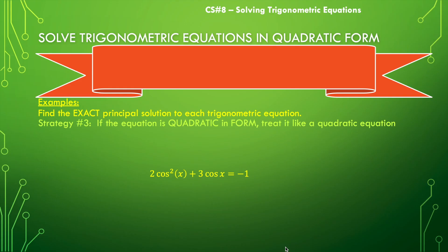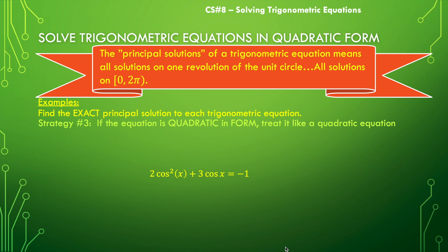Before we jump into that, we're going to introduce a new concept. In the past two videos, we've been talking about solving for general solutions or all possible solutions. We're going to introduce the concept of solving for the principal solutions only, which means we want to identify the solutions found on one rotation of the unit circle — everything from zero to two pi, nothing negative and nothing greater than two pi.